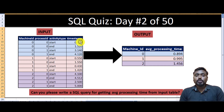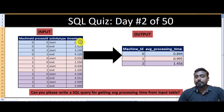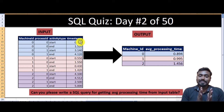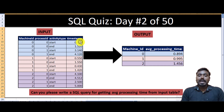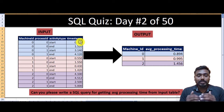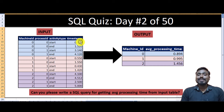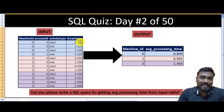First, we create two columns based on the activity type: start time and end time. If the activity type is 'start', that timestamp becomes the start time. If the activity type is 'end', that timestamp becomes the end time. Then we take the MAX of these two columns grouped by machine ID and process ID — this brings start and end into a single row. We then subtract end time minus start time and take the average.